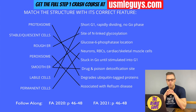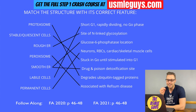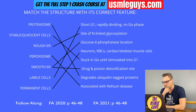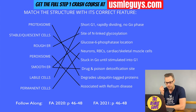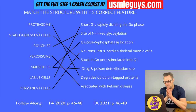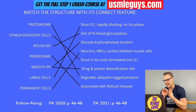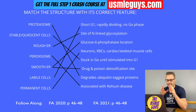Refsum disease is also inherited in an autosomal recessive manner and is associated with defective alpha-oxidation. This leads to the buildup of phytanic acid, a branched-chain fatty acid that requires alpha-oxidation for breakdown. Patients are characterized by scaly dry skin, night blindness, ataxia, epiphyseal dysplasia, shortening of the fourth toe, and cataracts. This can be managed with proper diet and plasmapheresis.